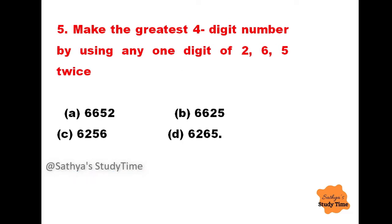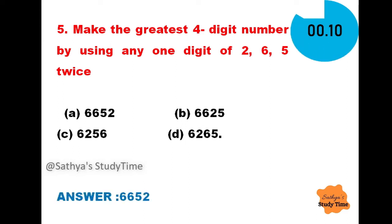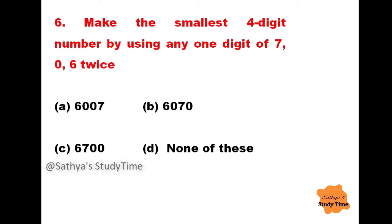Question 5: Make the greatest four-digit number by using any one digit of 2, 6, 5 twice. Your time starts now. The answer is 6665.